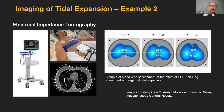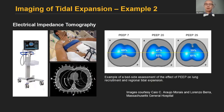Another method is electrical impedance tomography, a bedside imaging method using a belt around the chest with an array of electrodes that measure a field of impedances in the lung that can be reconstructed as a map of lung inflation and tidal expansion. Here in this example, we see a PEEP titration of the lung and re-opening of alveoli.